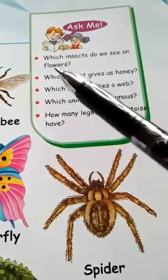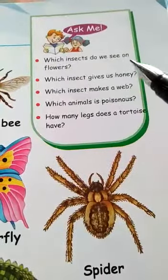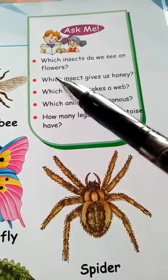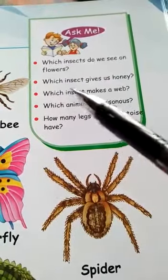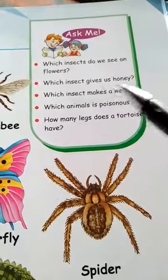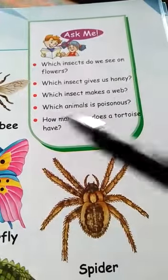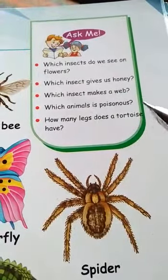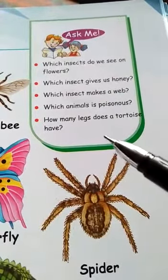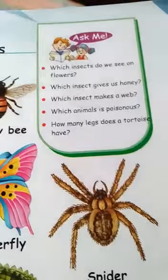The questions are: Which insects do we see on flowers? Which insect gives us honey? Which insect makes a web? Which animal is poisonous? How many legs does a tortoise have?